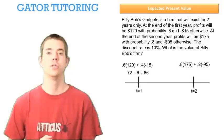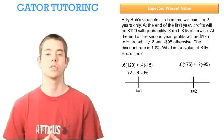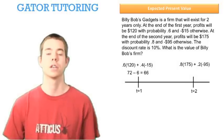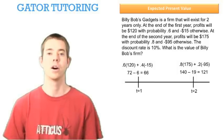So in year two, we do the same process now with an 80% chance of $175 and a 20% chance of negative $95. Adding that up, we see that in year two, we expect to make $121.